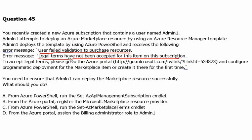The question is very straightforward and the error is self-explanatory — there are some terms and conditions not being accepted for that particular item. Let's look at Option A: from Azure PowerShell, run the Set-AzApiManagementSubscription cmdlet. This command is actually used to set the existing subscription details. It has nothing to do with the terms and conditions of a resource provider, so this is not the correct answer.